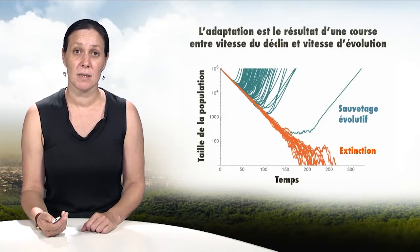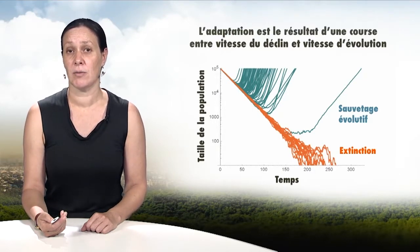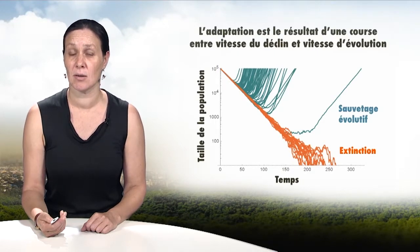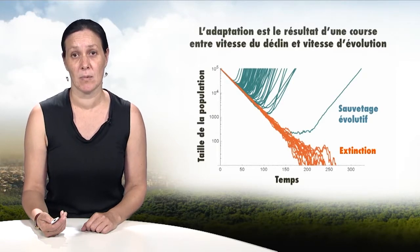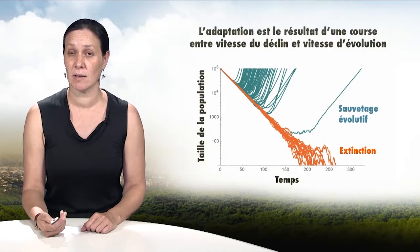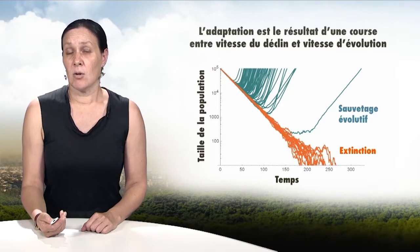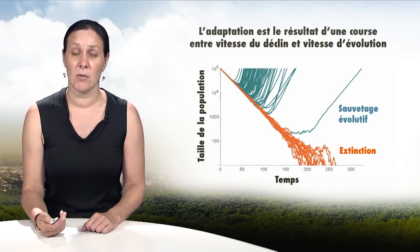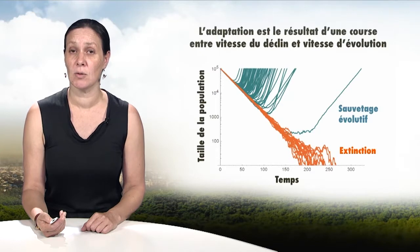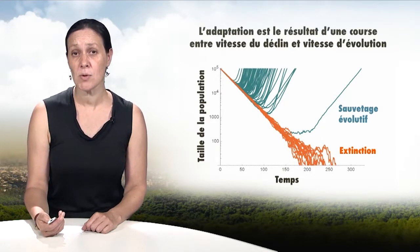The evolution of resistance in mosquitoes also allows us to better understand the limitations of genetic adaptation. First, a mutation must exist in the population, whether it appears locally or was introduced through migration. Adaptation in a stressful environment, such as one subjected to pesticides, is the result of a race between the decline of a population and the speed of adaptation. A favorable gene must exist and occur frequently. This is called evolutionary salvation.